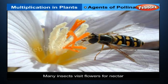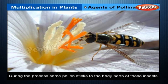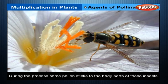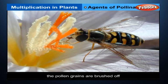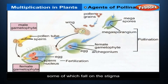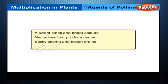Insects: many insects visit flowers for nectar. During the process, some pollen sticks to the body parts of these insects. When the insect visits another flower, the pollen grains are brushed off, some of which fall on the stigma. Insect-pollinated flowers usually have a sweet smell and bright colours, nectarines that produce nectar, and sticky stigma and pollen grains. Examples are buttercup, sweet pea, and orchids.